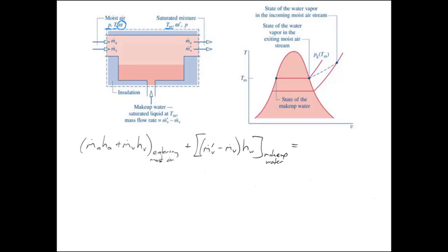On the right-hand side, we get the mass flow rate of the air times the enthalpy of the air, plus the mass flow rate of the vapor prime — because it has changed by picking up makeup water — times the exiting enthalpy. That is all the exiting moist air.